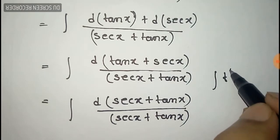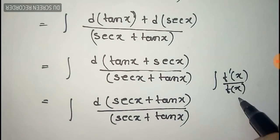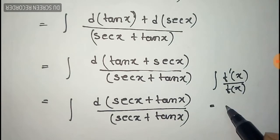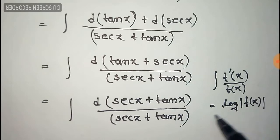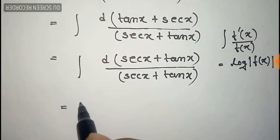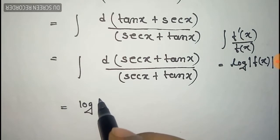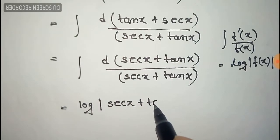Now we apply the formula that f dash x by f x, where f dash x is the derivative of f x. Integration of this is log of mod of f x. So using this formula here, the upper part is the derivative of the below part. So we can use the formula here and the answer would be log of mod of the below part, that is sec x plus tan x.